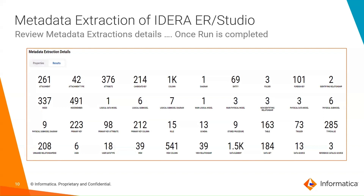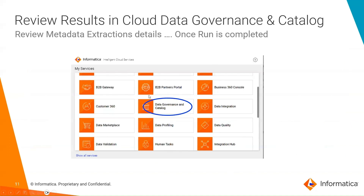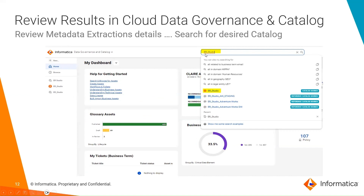The Metadata Command Center pushes this information to the Informatica catalog. To view the results in the catalog, we have to log in to Informatica Data Governance and Catalog. Go back to the IDMC main portal and select Data Governance and Catalogs. After Metadata Command Center completes, it pushes all the metadata into the data governance and catalog, where we can see catalog information with multiple dimensions such as hierarchical structure, relationship, status, lineage, etc. Once you log in to the catalog, you can search for the resource you created or browse from the list of available resources. Click on the resource to open it and view an overview of that resource.